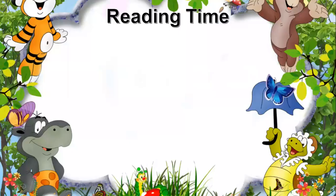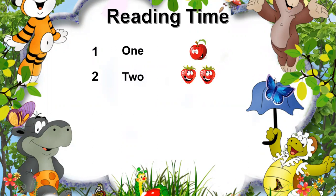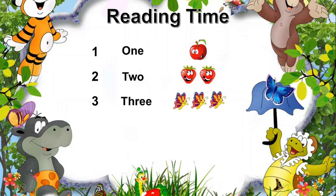Reading time students! This is number one — spell it: O-N-E, 1. One apple. Number 2: 2 strawberries — T-W-O, 2. Number 3: 3 butterflies — T-H-R-E-E, 3.